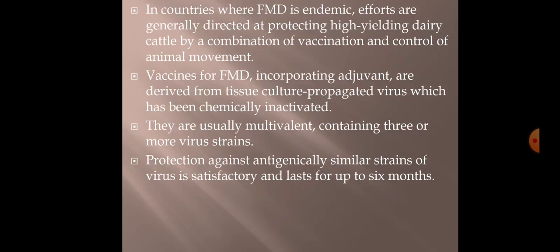In countries where FMD is endemic, efforts are directed at protecting high-yield dairy cattle through a combination of vaccination and control of animal movement. Vaccines for FMD incorporating adjuvants are derived from tissue-culture-propagated viruses that have been chemically inactivated. They are usually multivalent vaccines containing three or more viral strains. Protection against antigenically similar strains is satisfactory, and immunity lasts for up to 6 months, after which re-vaccination is needed.